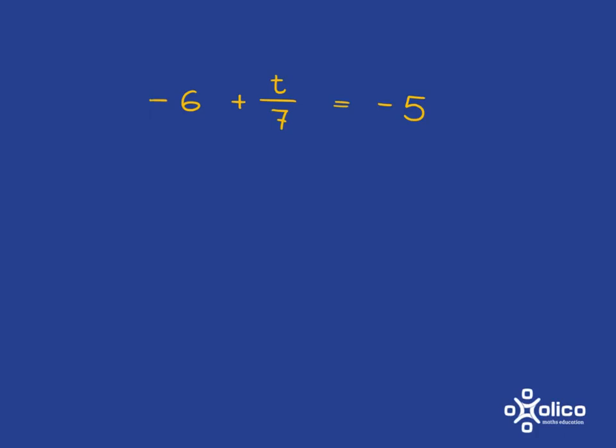So we first need to have a look at what we need to do to get rid of this. We've got a negative 6. To get rid of it, we're going to add 6. And what we do to one side of the equation, we must do to the other.